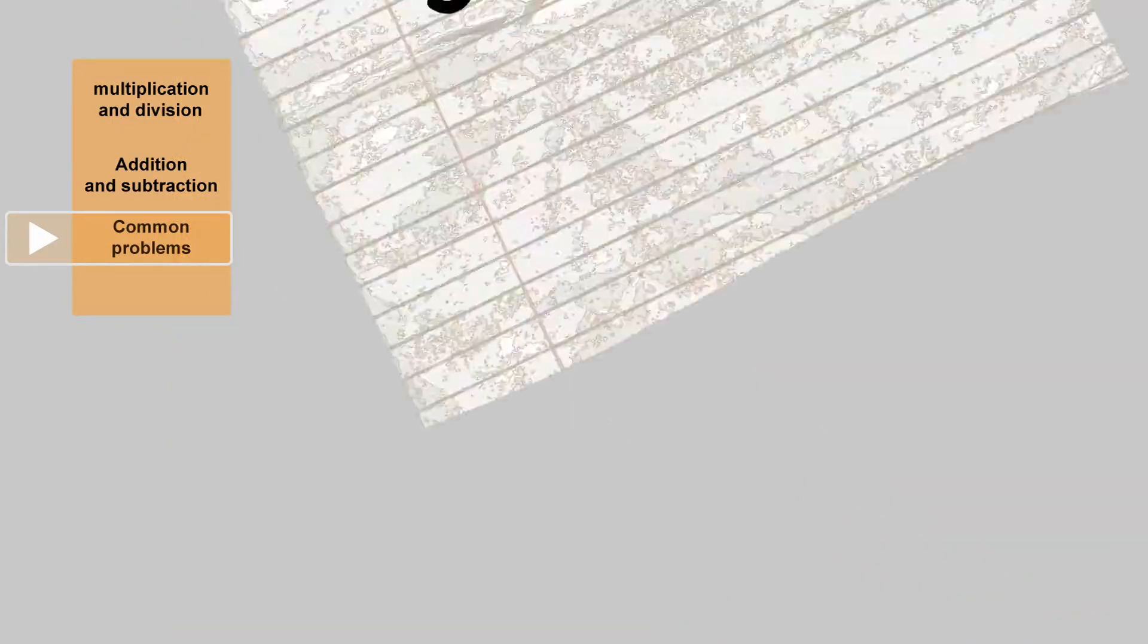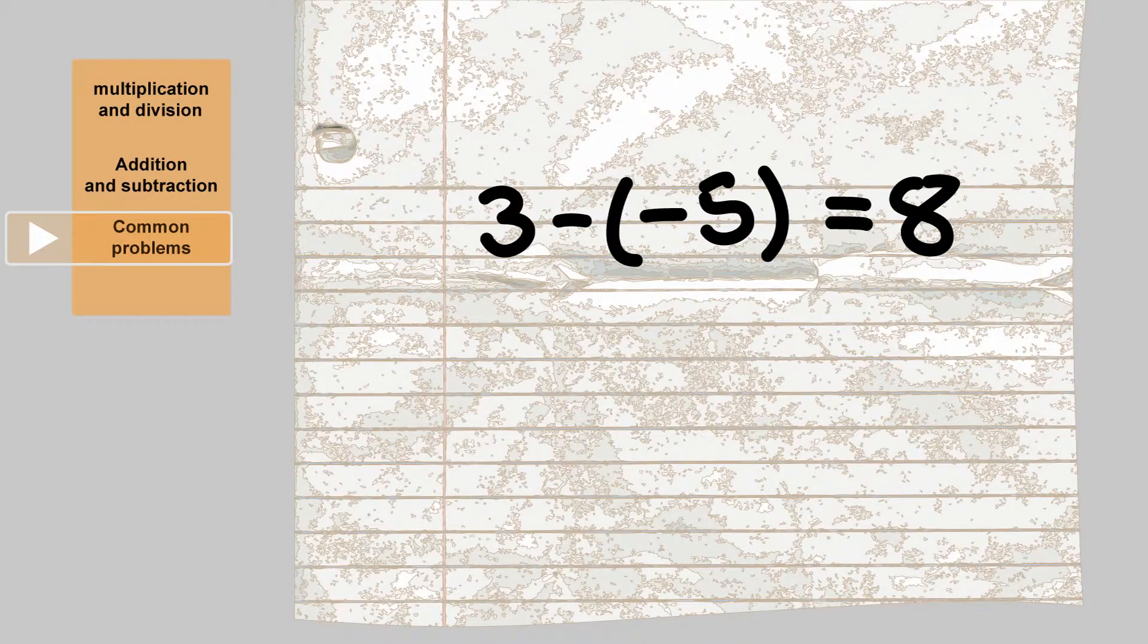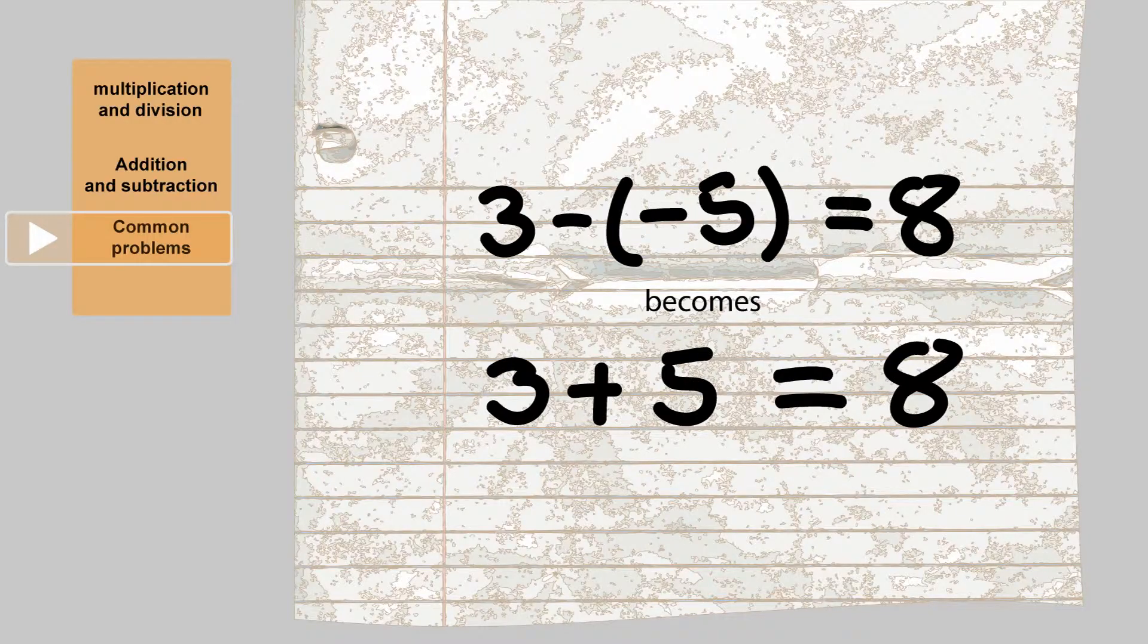Another common problem is multiplying out brackets. Take 3 minus minus bracket negative 5 close brackets equals 8. A good way to deal with these is to think of the negative sign as an instruction to make the number to the right of it the opposite sign. So negative and negative becomes positive. So 3 minus open brackets negative 5 close brackets becomes 3 plus 5 equals 8.